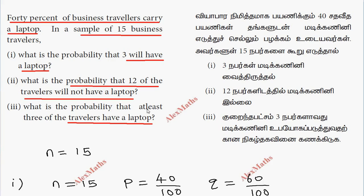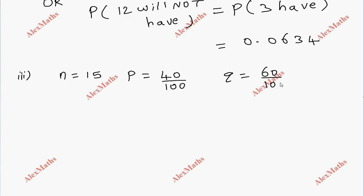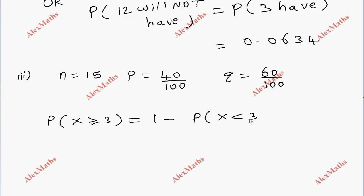Third subdivision: at least three of the travelers have a laptop. P and Q values remain the same: n = 15, p = 0.4, q = 0.6. We need P(x ≥ 3), which equals 1 − P(x < 3). Since x < 3 means x can be 0, 1, or 2, we compute 1 − P(x < 3).